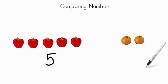And how many oranges do we have? That's right, we have two oranges. So another way we can think of it is that there are more apples and less oranges.